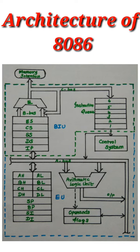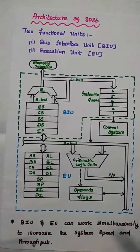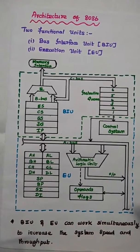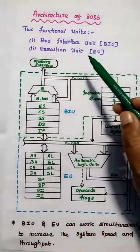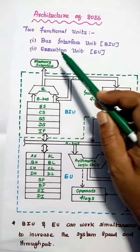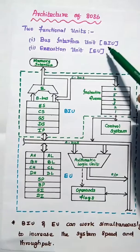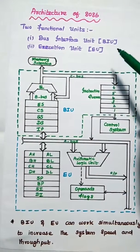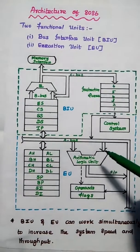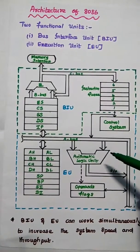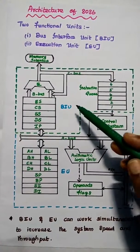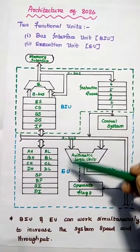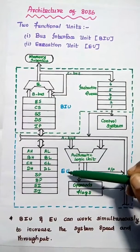Now we are going to discuss the architecture of the 8086 microprocessor in detail. The architecture of the 8086 microprocessor has two important functional units: one is the Bus Interface Unit, simply BIU, and the other is the Execution Unit, EU. This is the architecture diagram of the 8086 microprocessor showing these two functional areas.